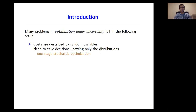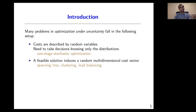Our work is motivated by growing interest in optimization under uncertainty. The category of problems that we consider is called one-state stochastic optimization. Here, costs are described by random variables and we need to take decisions while only knowing the distributions of these costs. Each feasible solution induces a random multi-dimensional cost vector. For example, in k-clustering, the cost vector consists of the assignment cost of the points.